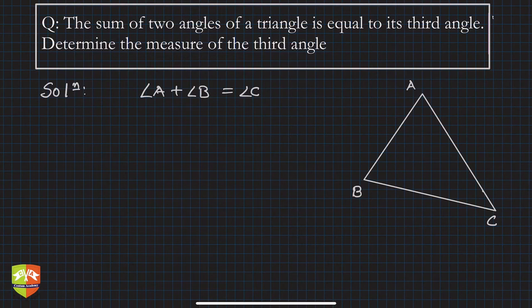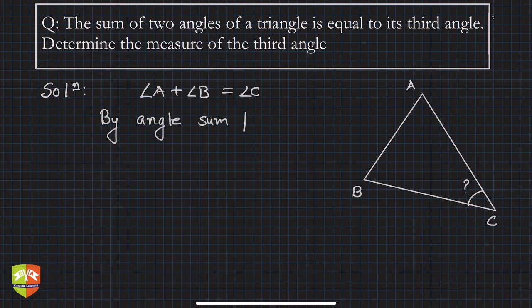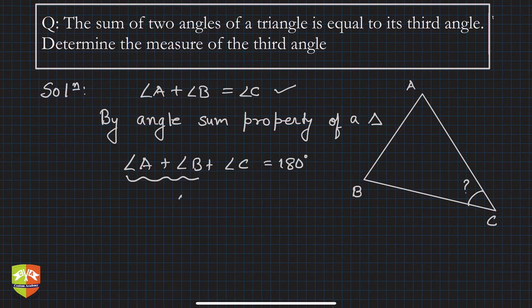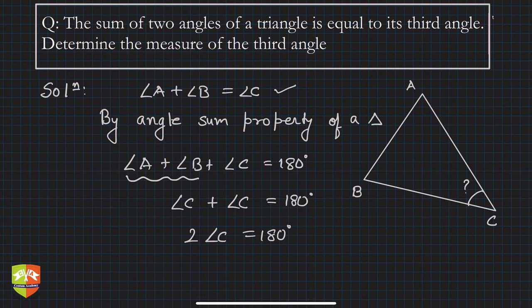We have to find the value of angle C. By the angle sum property of a triangle, we know angle A plus angle B plus angle C is 180 degrees. But angle A plus angle B equals angle C, so I can substitute: angle C plus angle C is 180 degrees, meaning twice angle C is 180 degrees, so angle C equals 180 divided by 2, which is 90 degrees.